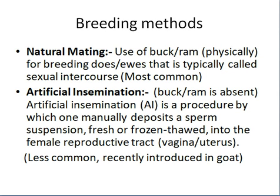Breeding methods are two: natural mating, where we use buck and ram physically for breeding does or ewes — this is called sexual intercourse and is the most common method in sheep and goat. The second is artificial insemination, where buck or ram is absent; we typically get semen from the male and introduce it into the vagina or uterus of the female. This is less common in sheep and goat and was recently introduced in goat in Pakistan.